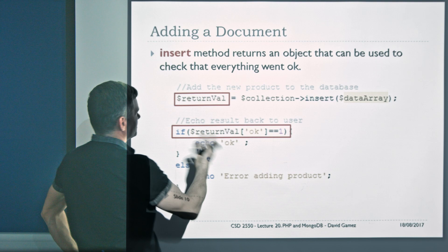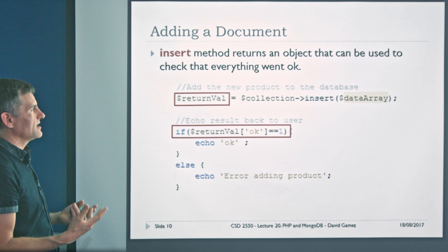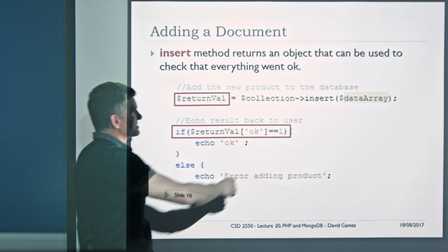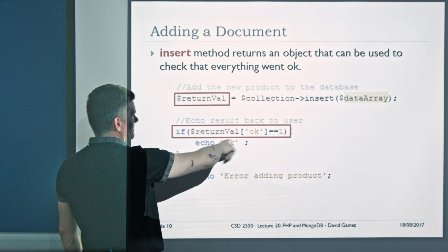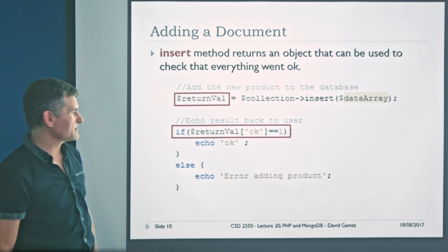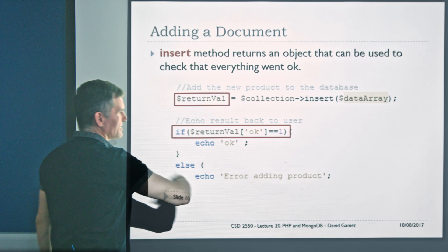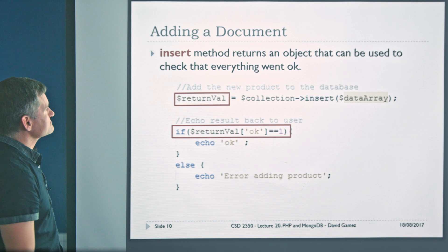The insert method returns an object we can use to check that it all went okay. Whenever you do stuff on a database with web stuff, you need to make sure it worked. The insert method returns an object, and we can access properties of the result such as 'ok'. If 'ok' is set to one, the operation was successful and we can echo the result back to the user. If it's not equal to one, there would be some kind of error, and you need to tell the user about that.